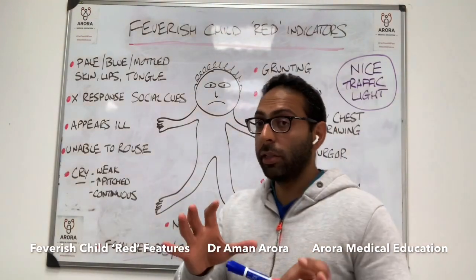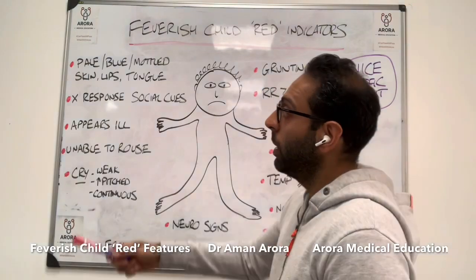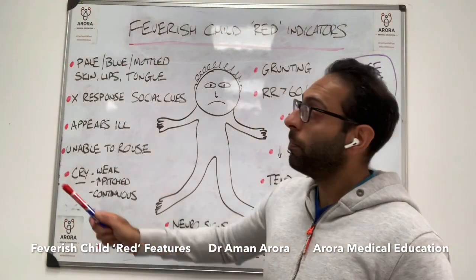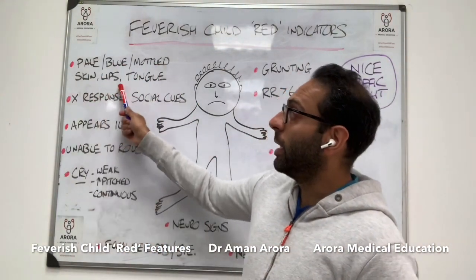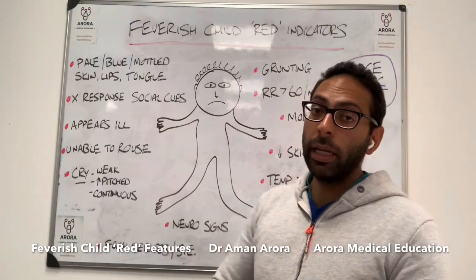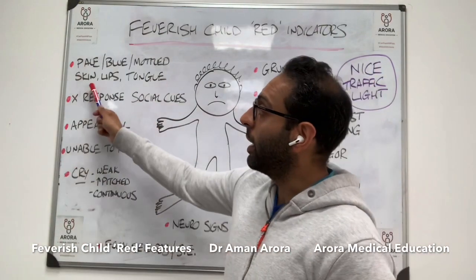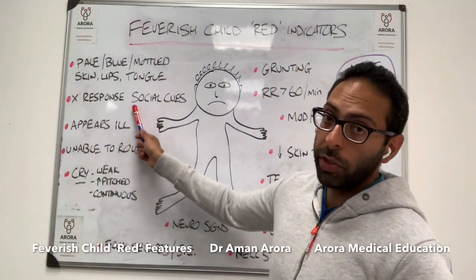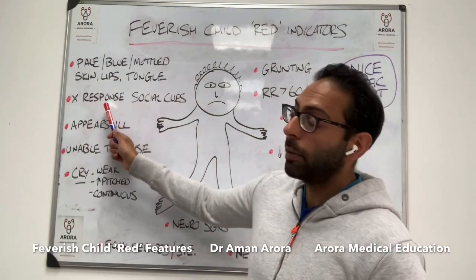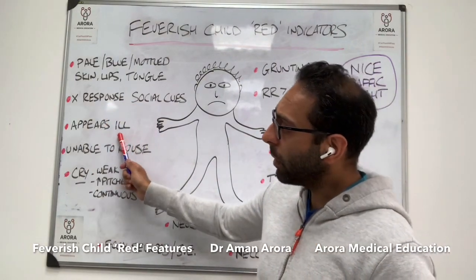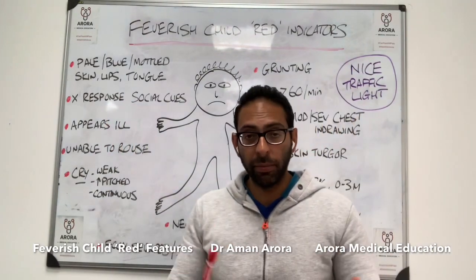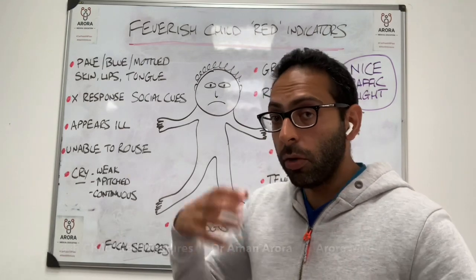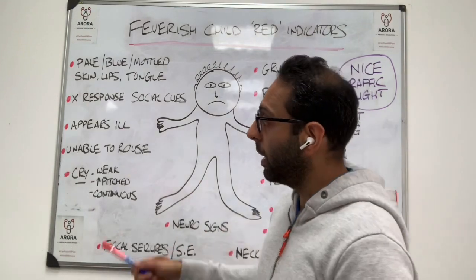So what are the kind of things to look out for from a red feature point of view? Pale, blue, mottled or ashen skin, lips or tongue. No response to social cues when you're assessing them. Appears ill to a healthcare professional — sometimes that gut feeling is very important. They appear ill; don't disregard that feeling.